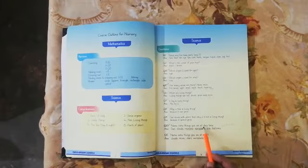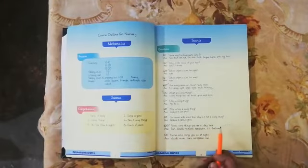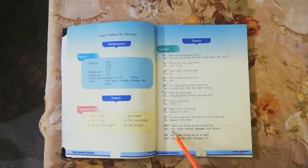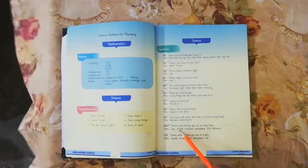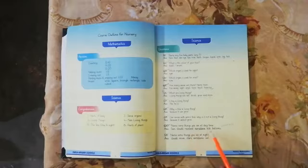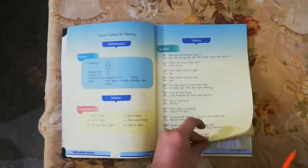Name something you see at day time. Sun, clouds, rainbow, aeroplane, kite, balloons. Yes. Now let's go to social study questions.